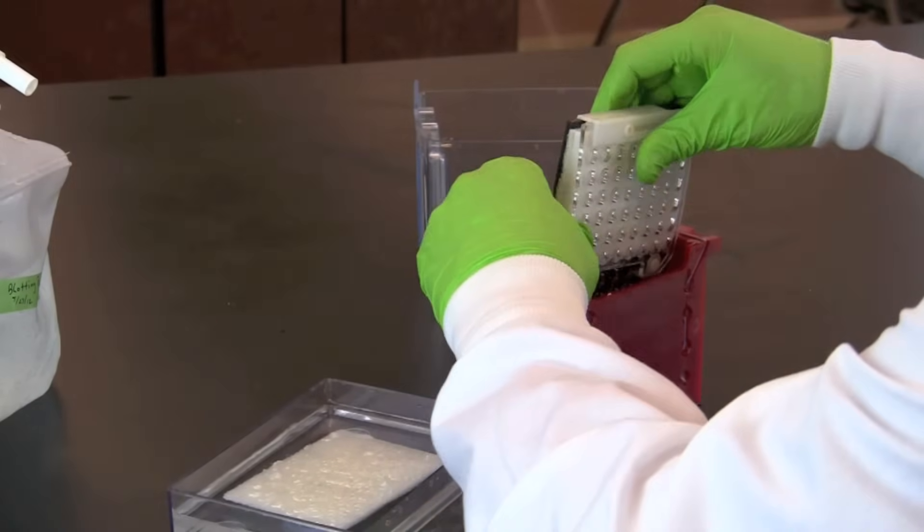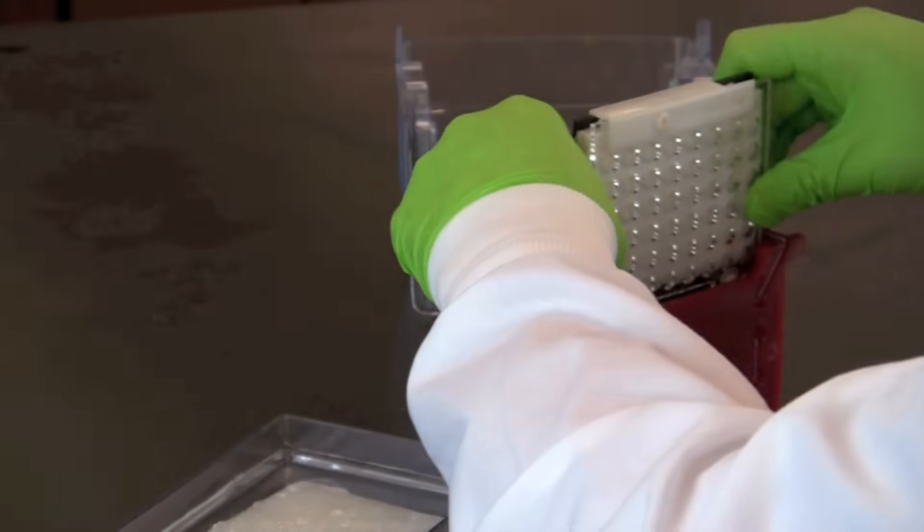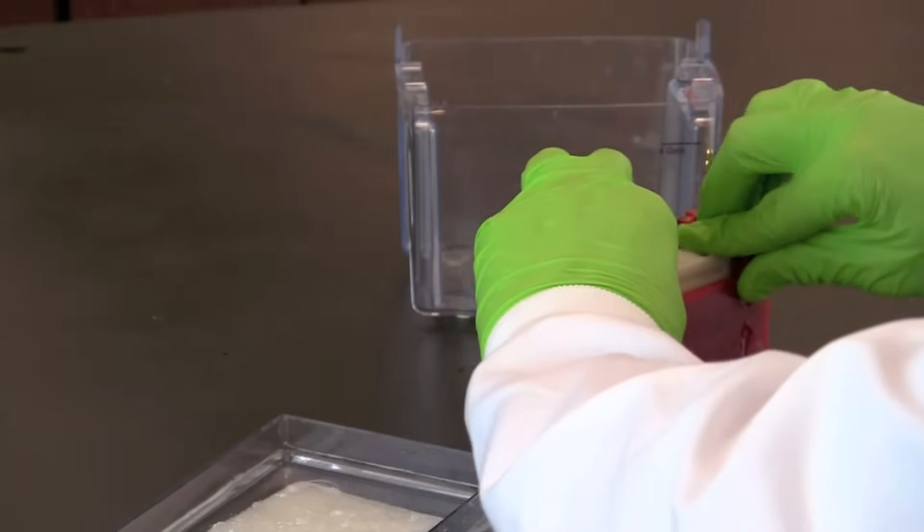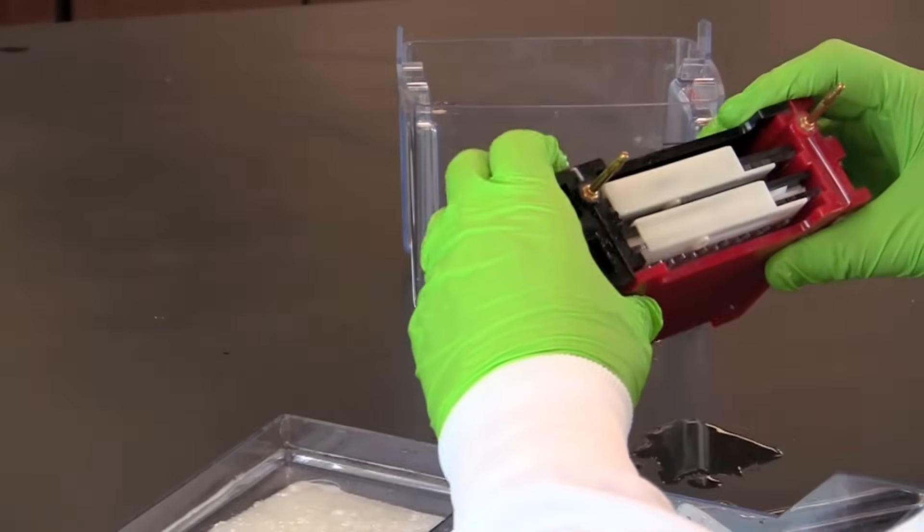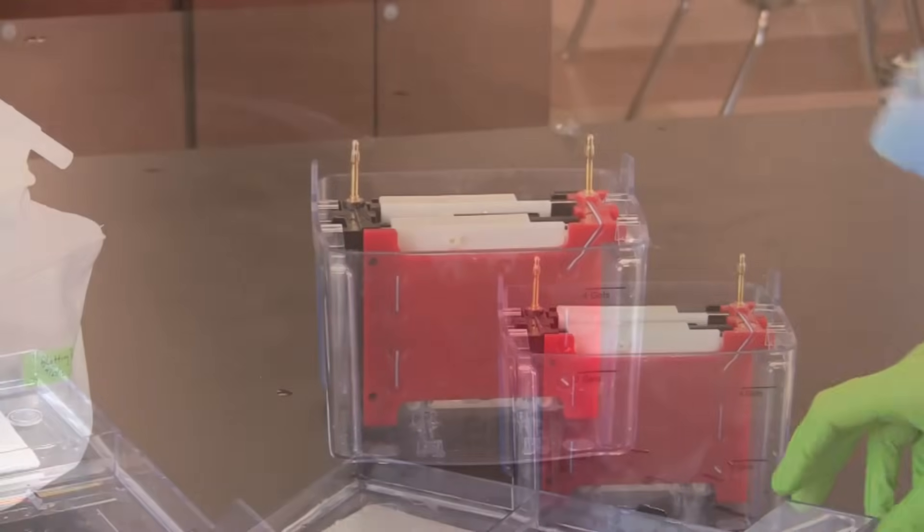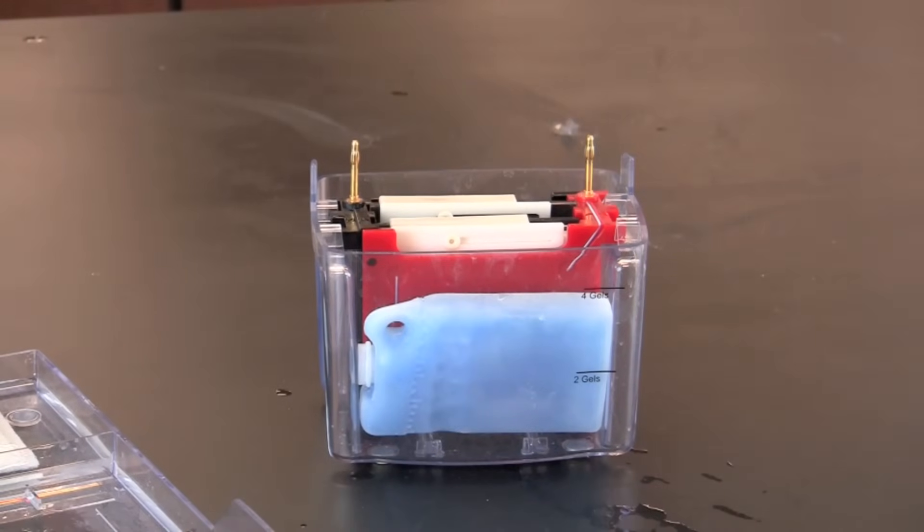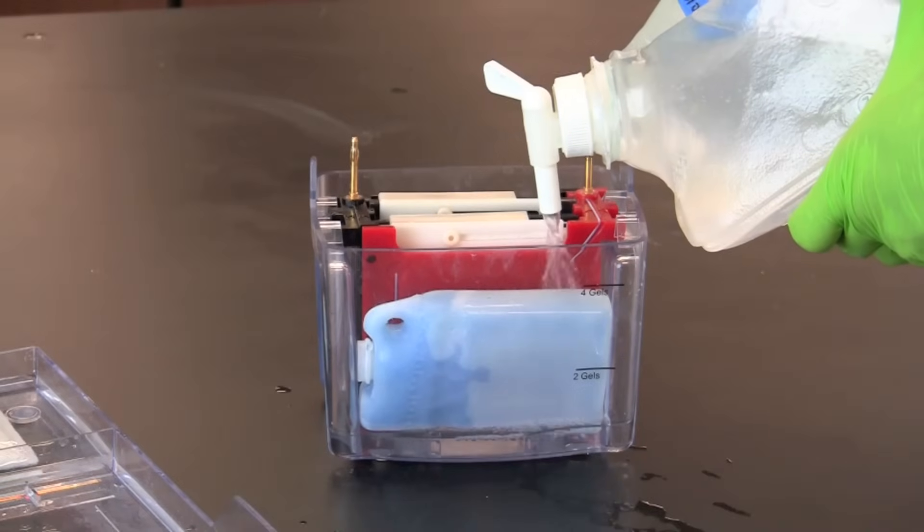Insert the gel holder into the inner module. Make certain that the black side of the gel holder is next to the black side of the module. Place the inner module into the electrophoresis chamber. Add a frozen cooling unit and fill the chamber with blotting buffer to the level of the white clip on the gel holder.